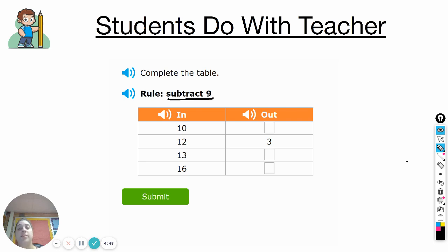Let's see if your answers match mine. The rule is subtract nine. So if I have 10 then I subtract nine and I get one. They already did 12 for us. 12 minus nine equals three. We have to do 13 minus nine which equals four.